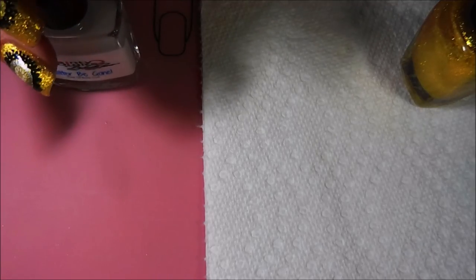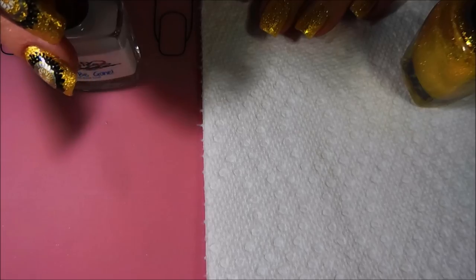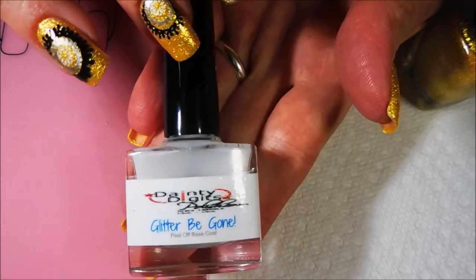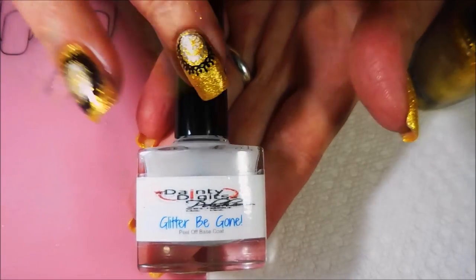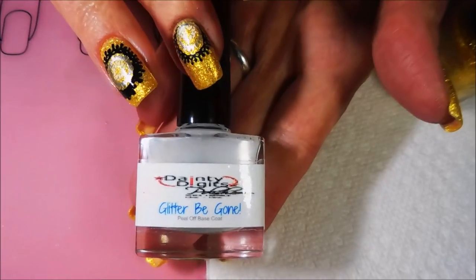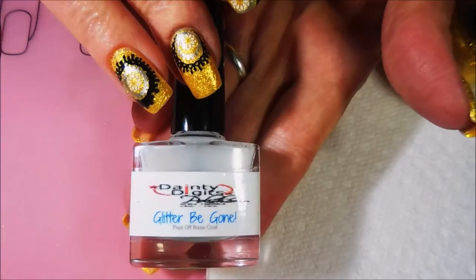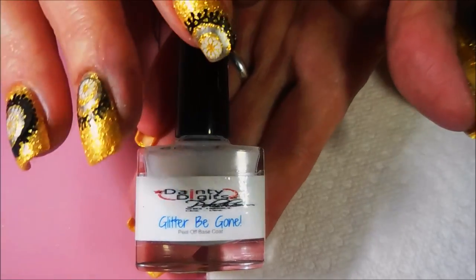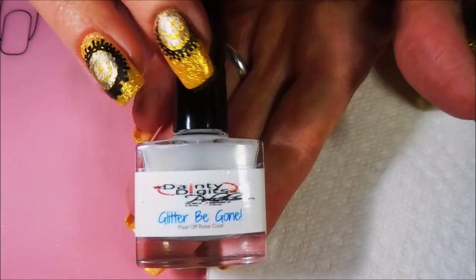Well hello my friend and welcome to my channel. Today I'm going to be doing a mandala manicure and I have started off with Dainty Digits Glitter Beyond. This is no longer being made by this company, which has turned into a new company called Baby Girl Lacquer, and it's still called Glitter Beyond. I'll try to remember to link this down below. It is a peel-off base coat.